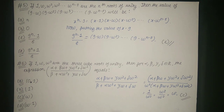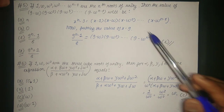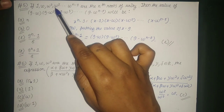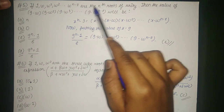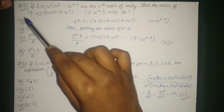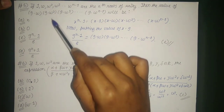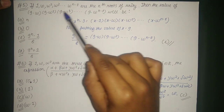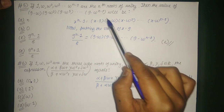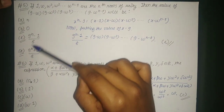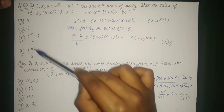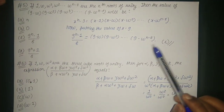The first question says: if 1, ω, ω², ω³, ... ω^(n-1) are the nth roots of unity, then find the value of (9 - ω)(9 - ω²)(9 - ω³)...(9 - ω^(n-1)). We are given four options: 0, (9^n - 1)/8, and (9^n + 1)/8.